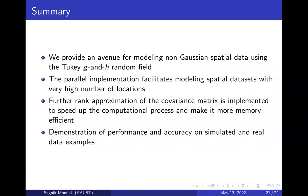In summary, we provide an avenue for modeling non-Gaussian spatial data using the 2KGH random field. The parallel implementation facilitates modeling spatial datasets with very high numbers of locations. We provide the tile low rank approximation of the covariance matrix, facilitating computation in terms of both speed and memory, and demonstrate performance and accuracy on both simulated and real data examples using our software.